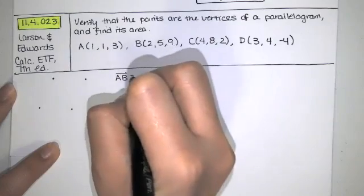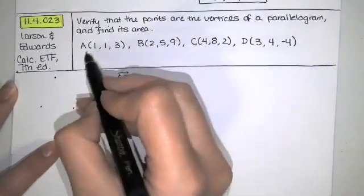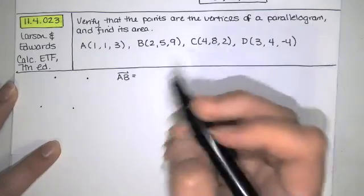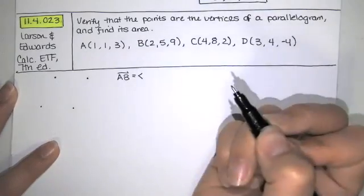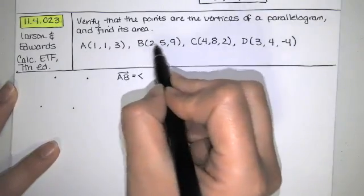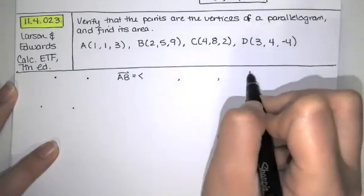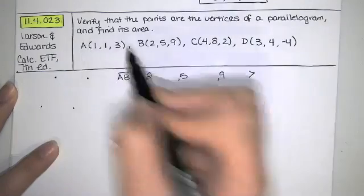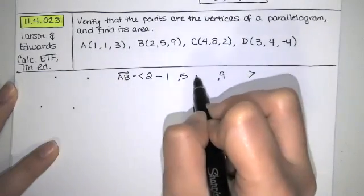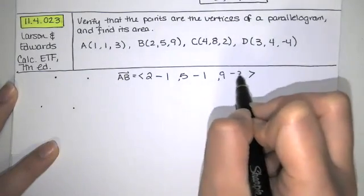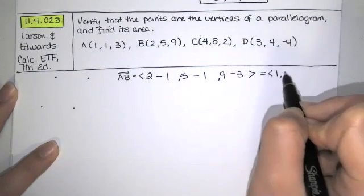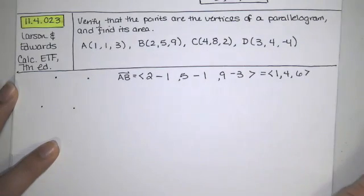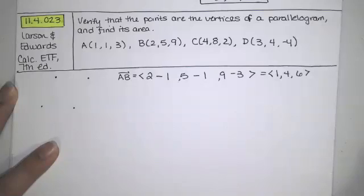Let's say that A is at one location and B is at another location. We've got these coordinates and these coordinates. If we want the vector from A to B, we just take the coordinates of B, that's 2, 5, and 9, and subtract the coordinates of A, that's 1, 1, and 3. When we do that, we get 1, 4, and 6 as our components of the vector AB.